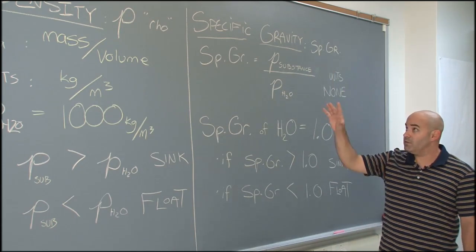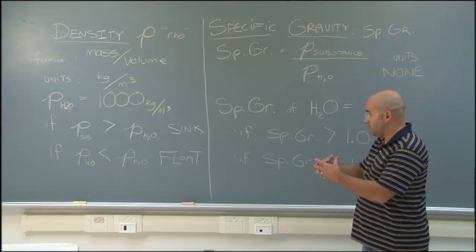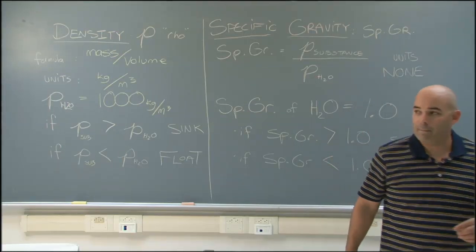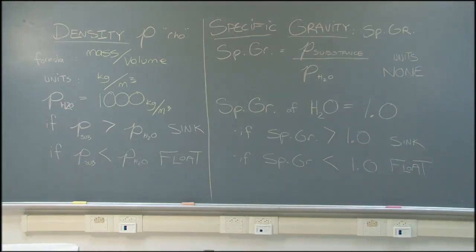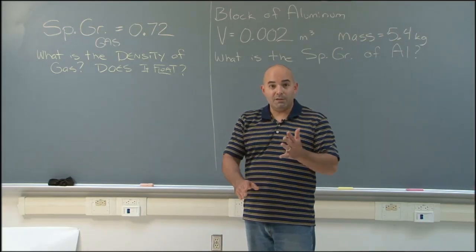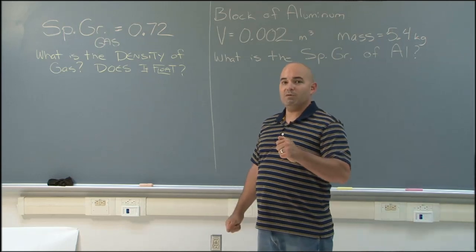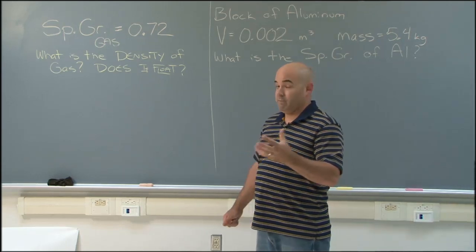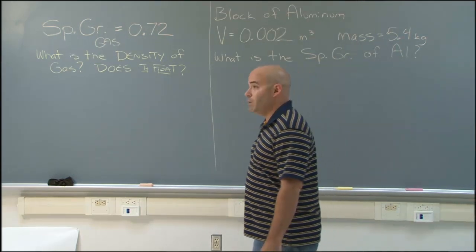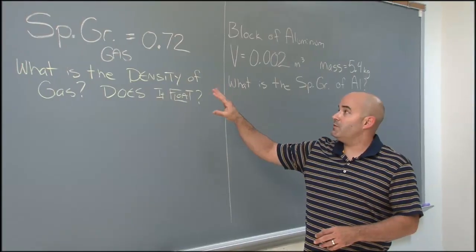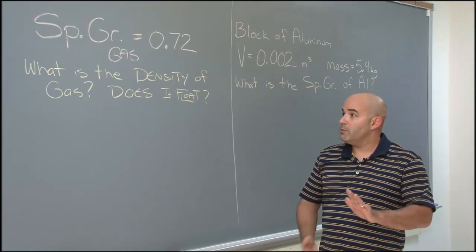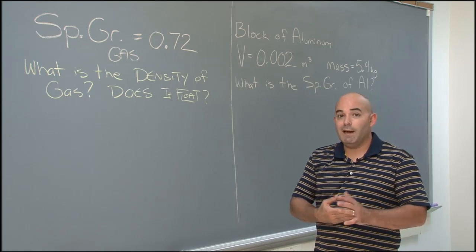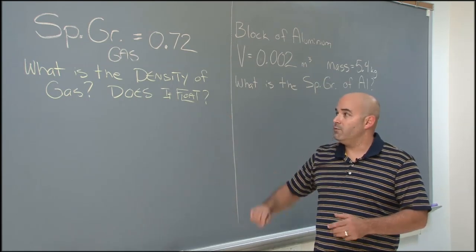Let's go solve some problems involving density and specific gravity and see how these two things tie together. Now that we know the definitions and the formulas for specific gravity and density, let's see if we can solve some basic questions. If we are given that the specific gravity of gasoline is 0.72, we should be able to calculate the density from that and figure out whether or not it floats or sinks.